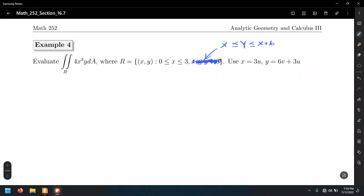However, the Y coordinate is varying differently this time. We have Y varying between X, that is the diagonal line Y equals X, and Y equals X plus 6, which is the same diagonal line but shifted 6 units up. And X is varying between 0 and 3.